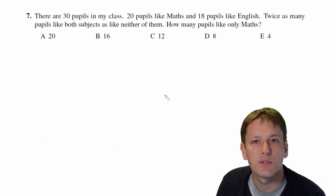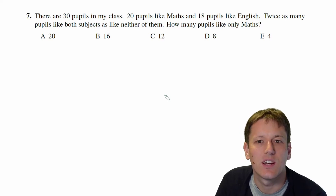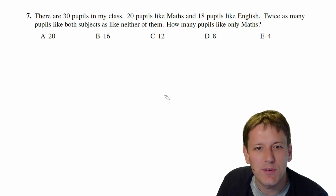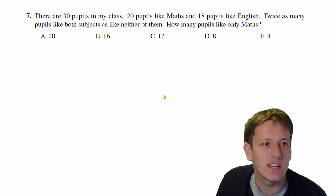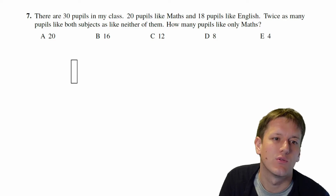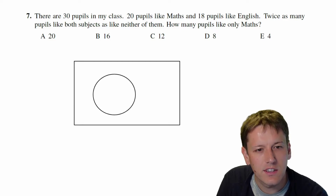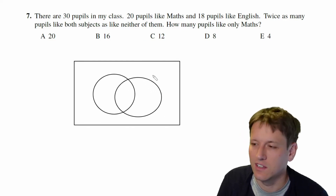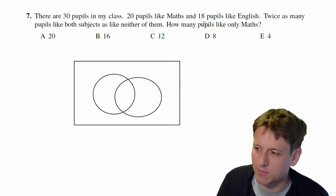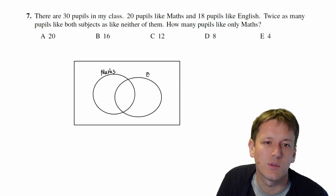Question 7: we've got 30 pupils in a class, 20 of them like maths and 18 like English. Twice as many pupils like both subjects as like neither of them. How many pupils only like maths? This sort of information is really nicely presented on a Venn diagram, so I'm going to draw one with pupils who like maths in one circle and pupils that like English in the other.